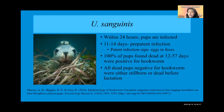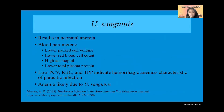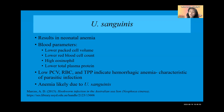This further solidifies the evidence that pup mortality is linked to U. sanguinis. U. sanguinis also results in a lot of neonatal anemia, which could be the cause of the pup mortality. In 2015, studies began finding the exact impact that this species of hookworm was having on the Australian sea lion.